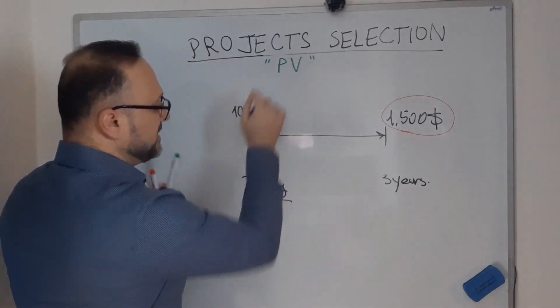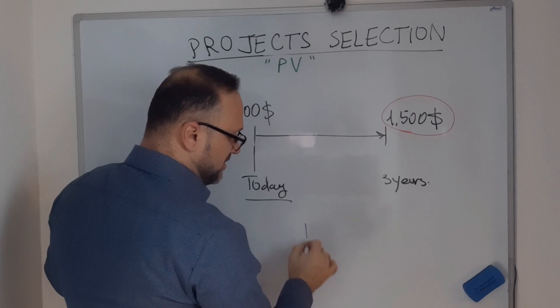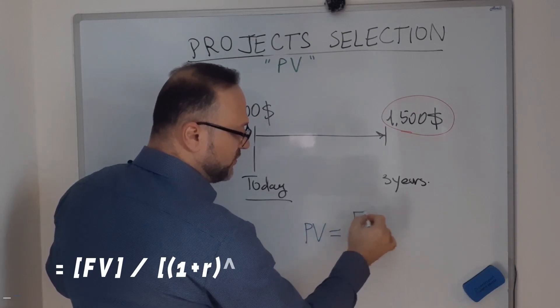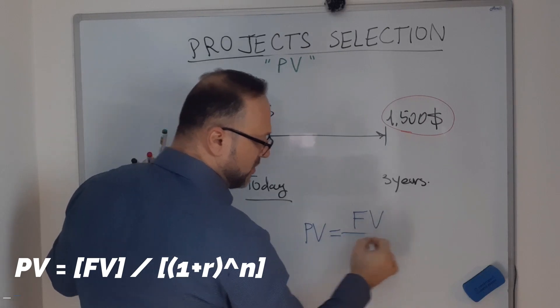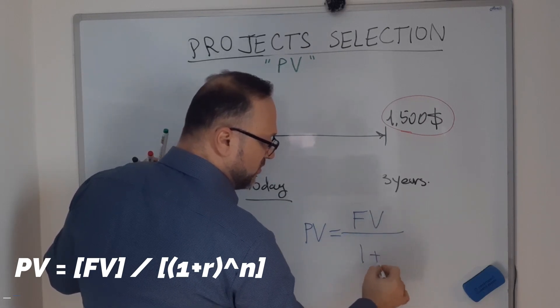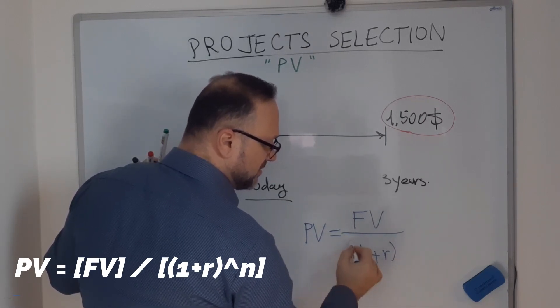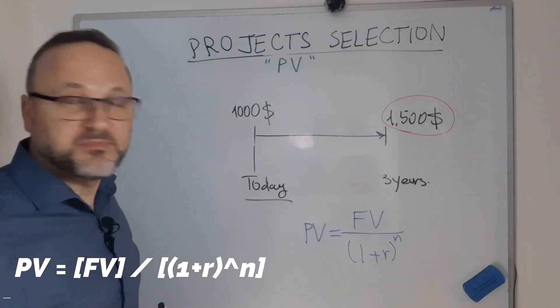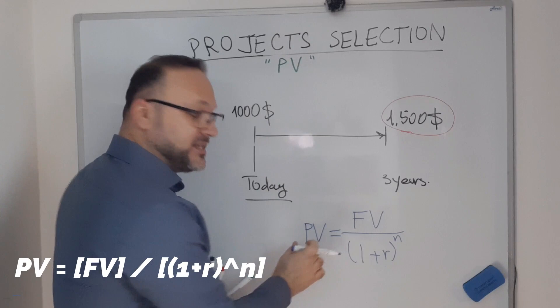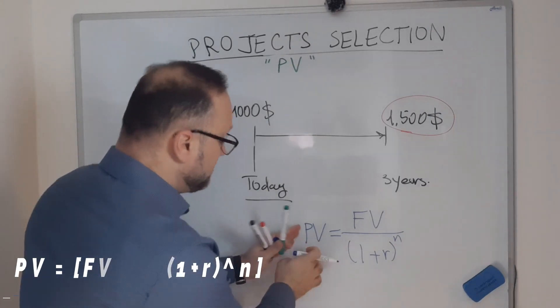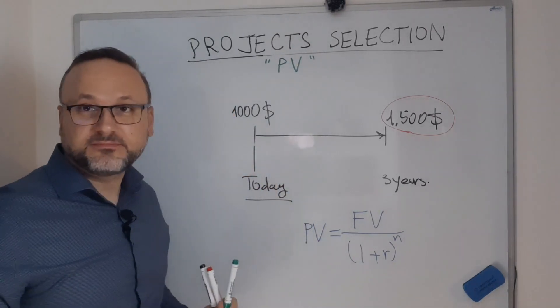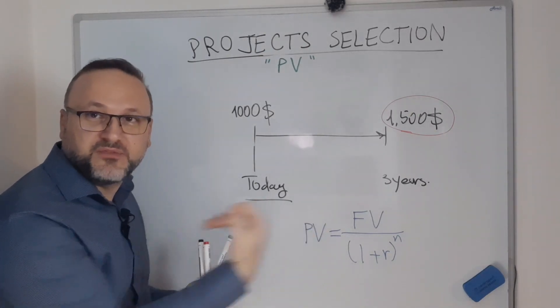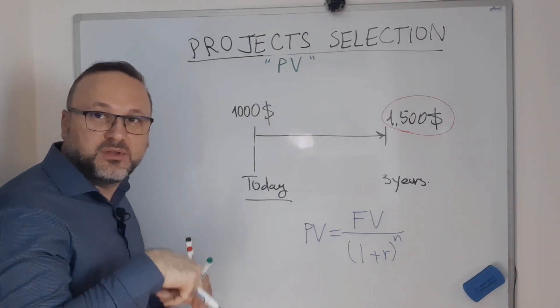There's a formula for present value calculation: present value equals future value over 1 plus r to the power of n.